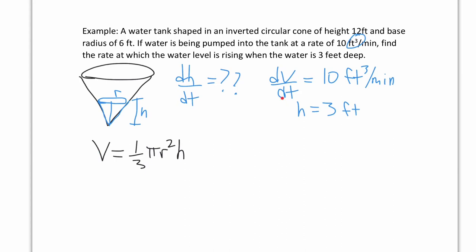Taking the derivative will give us dH/dt, which is what we want, and dV/dt on the left side. But we have two variables R and H, and if we use the product rule we'd get dR/dt, which we don't know — that's not a good path. Instead, we need to relate R and H. The question tells us the cone has height 12 and base radius 6, and we haven't used that yet.